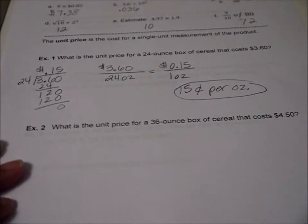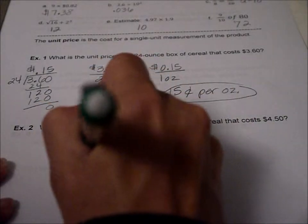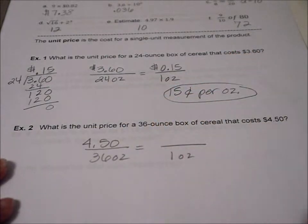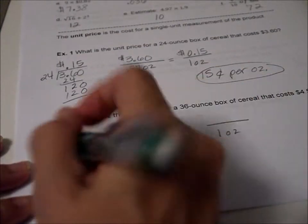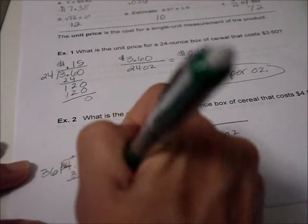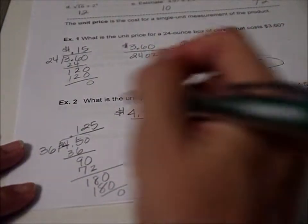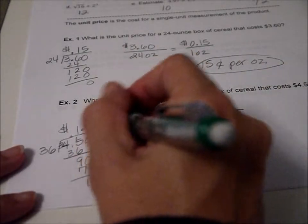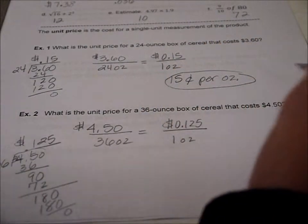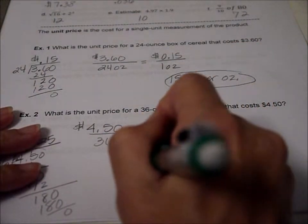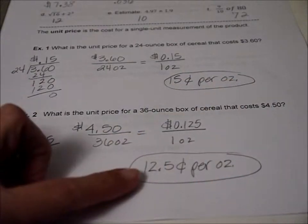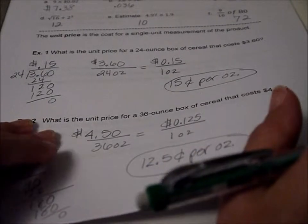So let's compare that to this one. Find the unit price for a 36 ounce box of cereal that is $4.50. So we divide again. So we get that when we divide, that is 12 and a half cents per ounce. So that means our answer would maybe say 12.5 cents per ounce. I remember those were called mils, M-I-L.